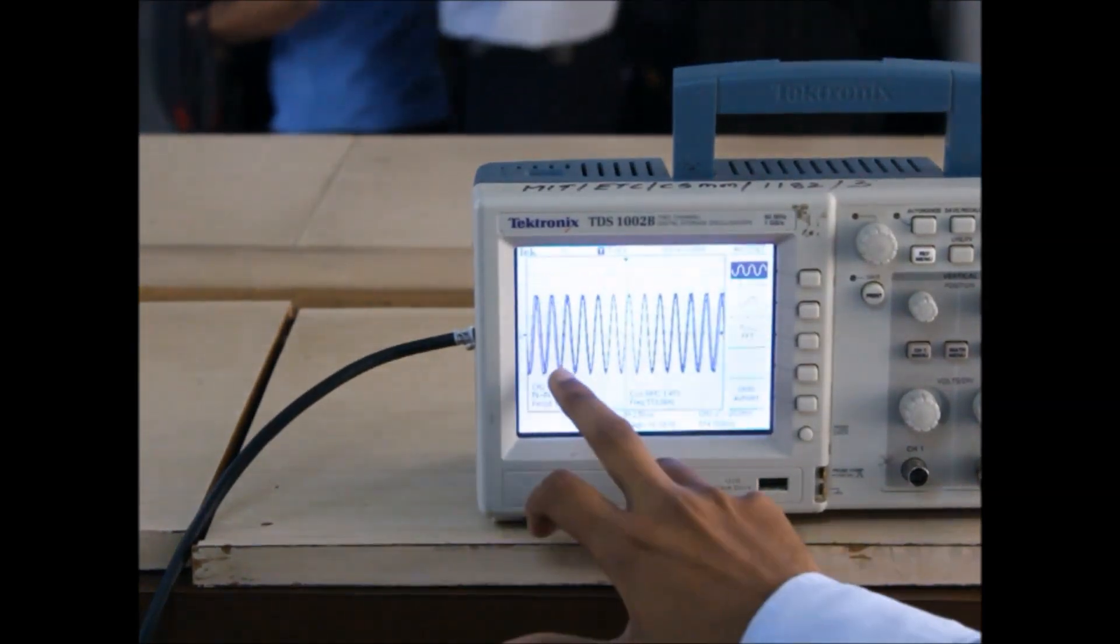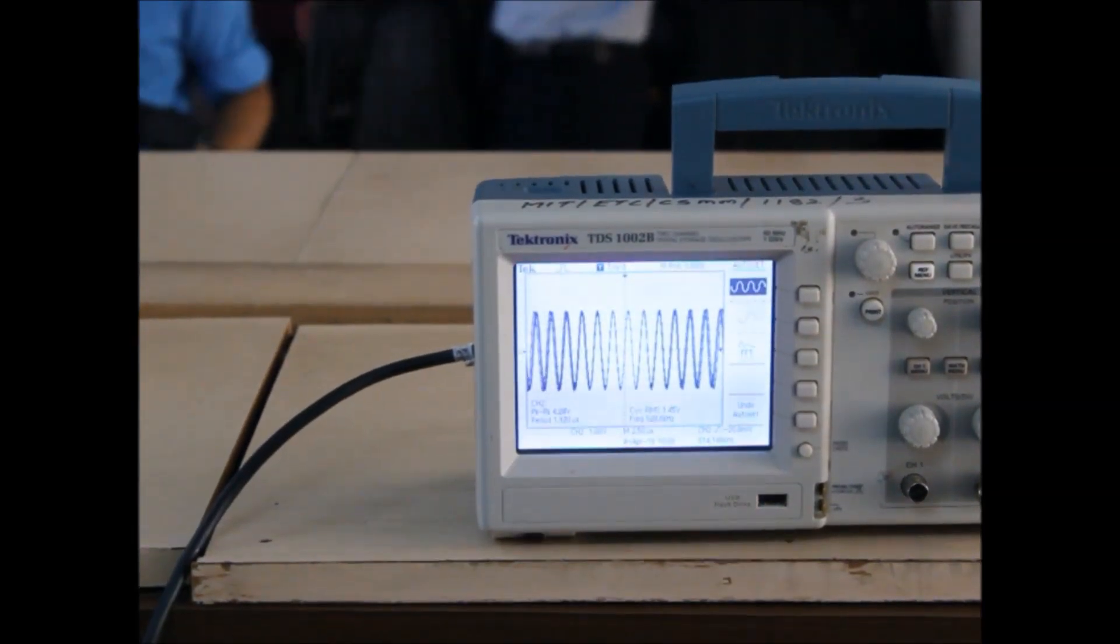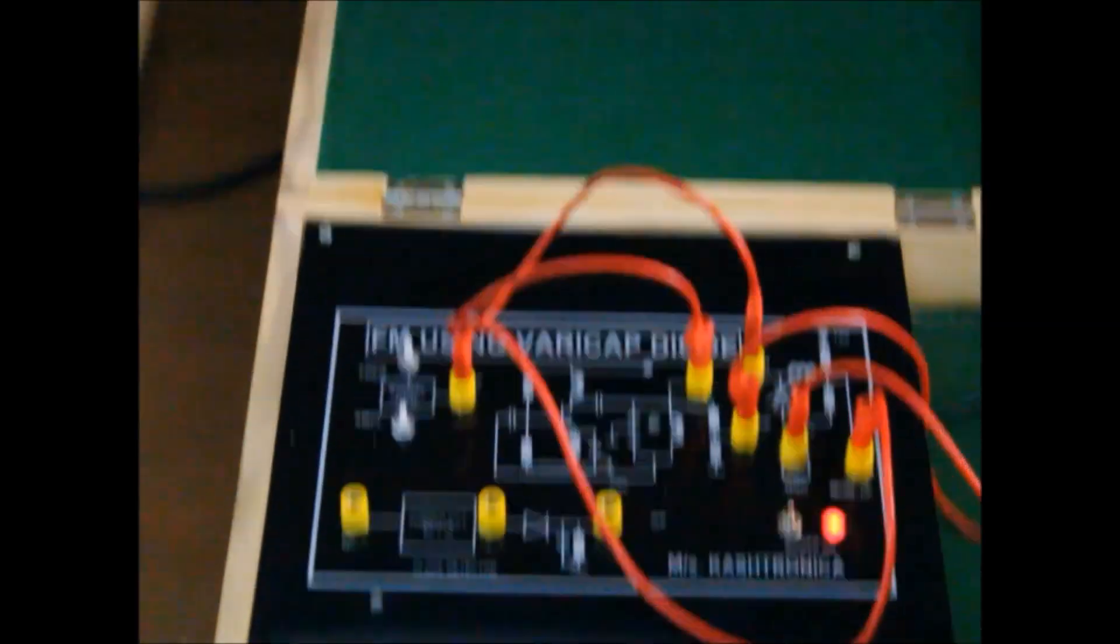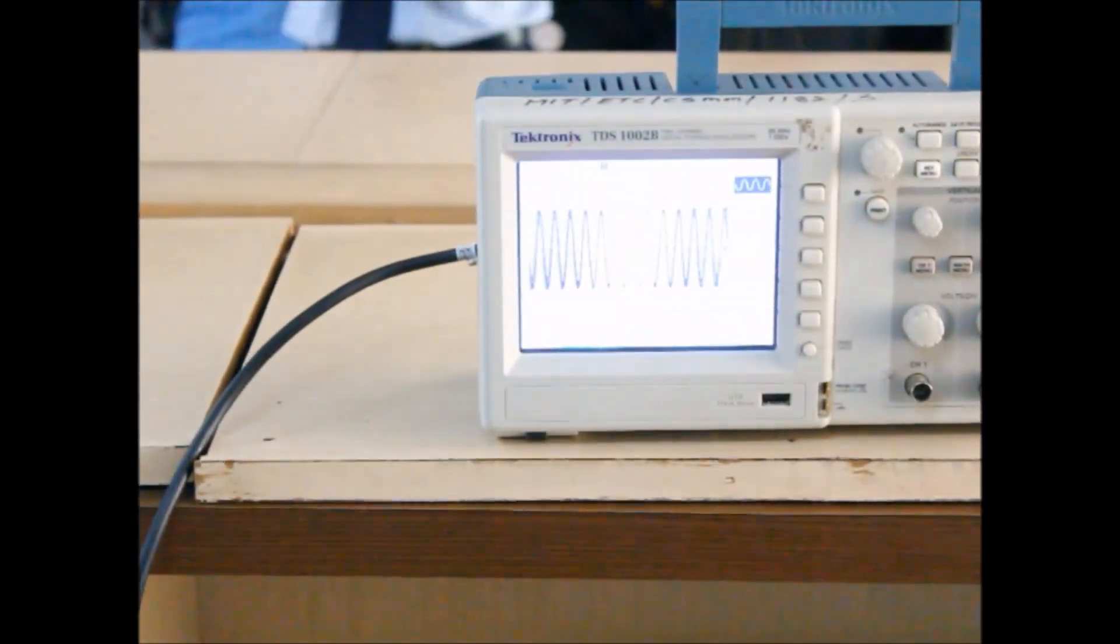As you can see, the amplitude here remains constant but there is frequency variation. To observe even more clear frequency variations, you can increase the amplitude of the modulating signal.